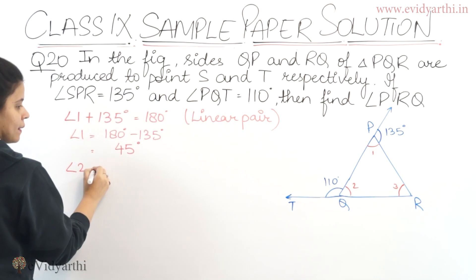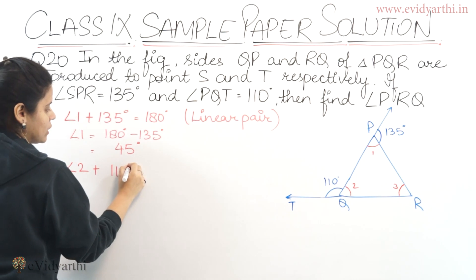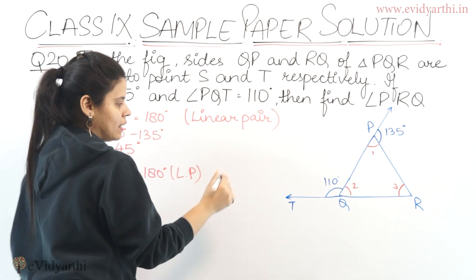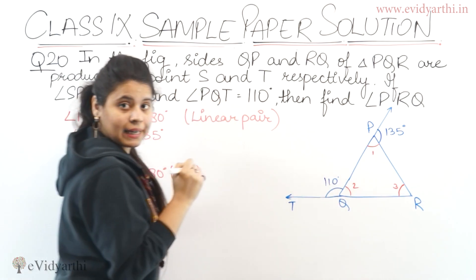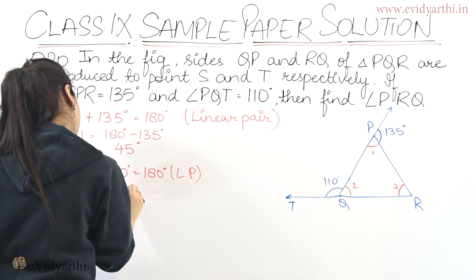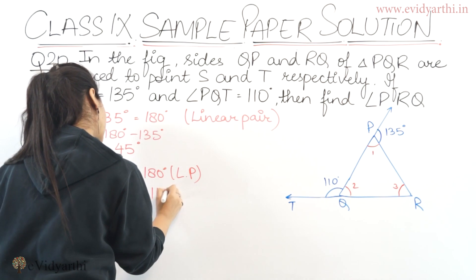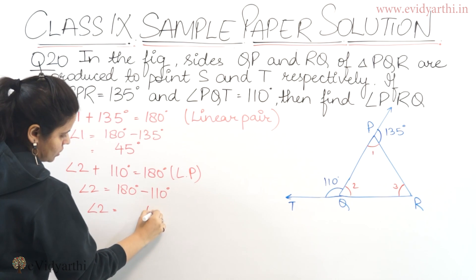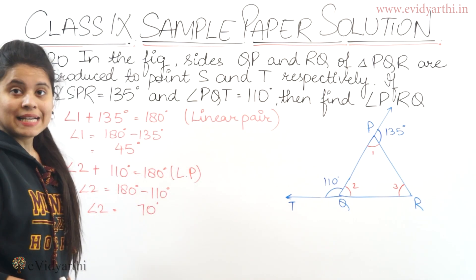Now we can find angle 2 plus 110 degrees equals 180 degrees. Reason again, linear pair. This also forms a linear pair. So angle 2 will be 180 degrees minus 110 degrees. Angle 2 equals 70 degrees.